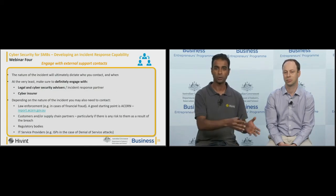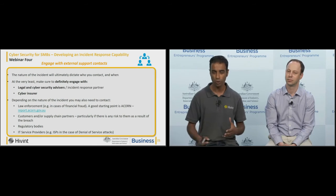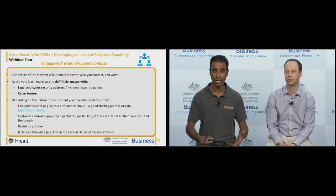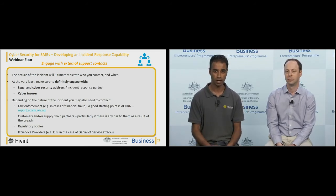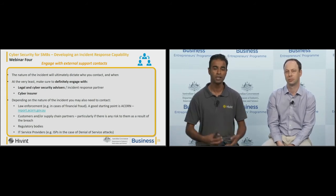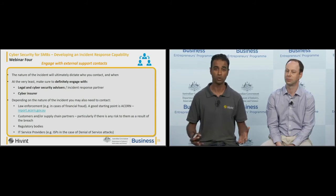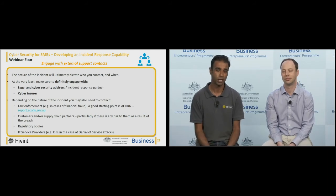It's now the time to also engage your external support contacts. The contacts you engage with will vary depending on the nature of the incident, but at the very least make sure to engage with your incident response partner — whether that's your preferred cybersecurity firm, IDCare, or someone else — early on in the process. Also, if you have a cyber insurance policy, engaging your insurer early is important as they'll want to be aware of the details of the potential claim. Your legal advisers should also be contacted given any potential regulatory obligations, such as the mandatory data breach notification laws, and there may be others depending on the nature of the incident, such as law enforcement, customers, supply chain partners, and regulatory bodies.